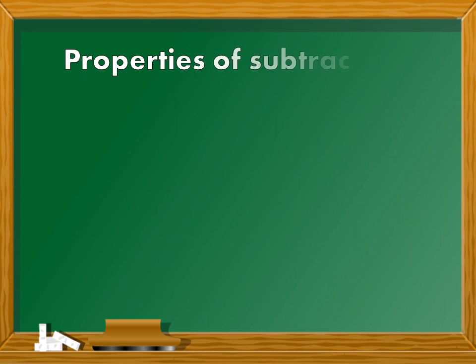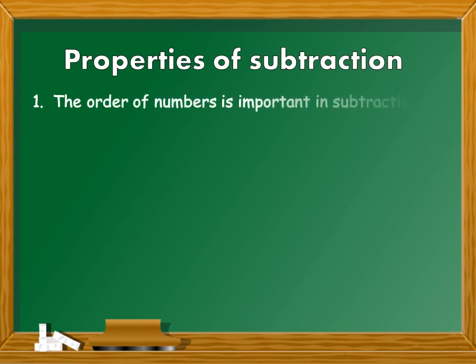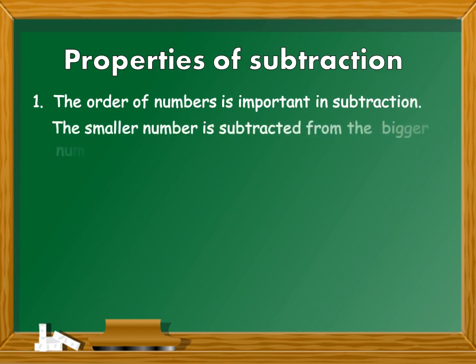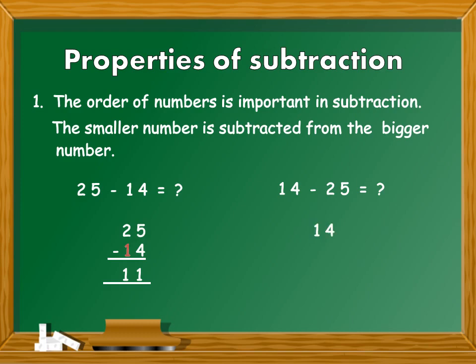We will move on to the properties of subtraction. Property number 1: The order of the numbers is very important in subtraction. It is always the smaller number that is subtracted from the bigger number. For example, if I ask you how much is 25 minus 14, you will write 25, below that minus 14. 5 minus 4 is equal to 1, 2 minus 1 is also equal to 1. The difference is 11. But if I interchange the numbers and ask you how much is 14 minus 25, your answer will be it is not possible.